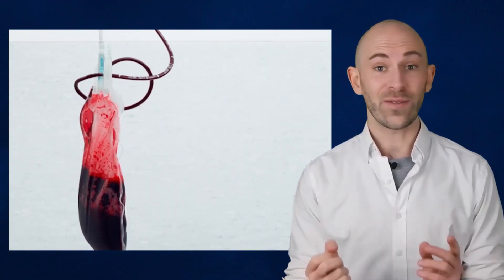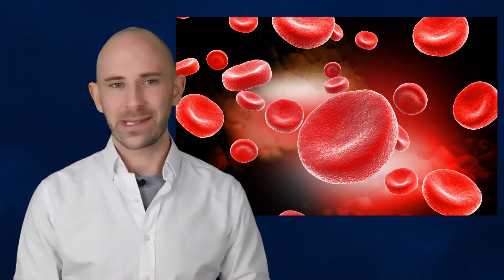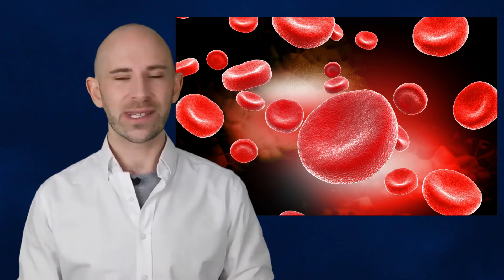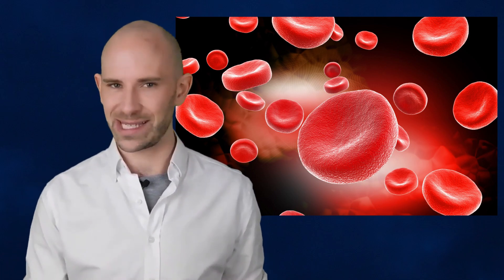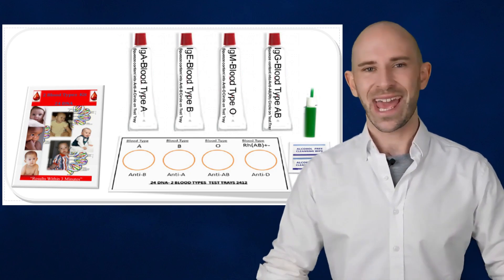Golden Blood. Nicknamed the Golden Blood, Rh Null is one of the rarest and most precious blood types on Earth. It's so rare that in 50 years only 43 people have been found to have this blood type.